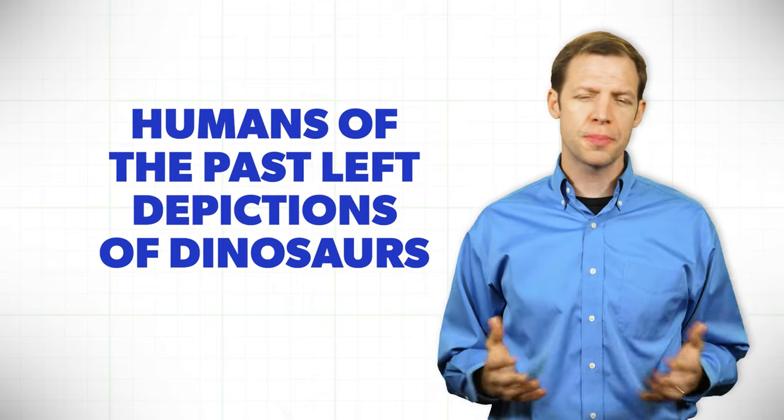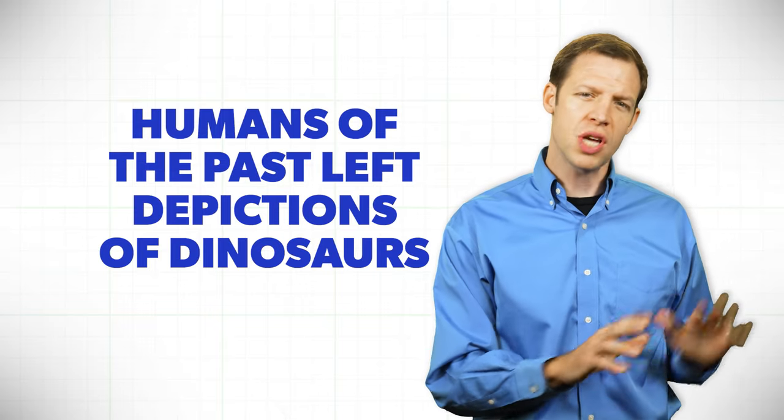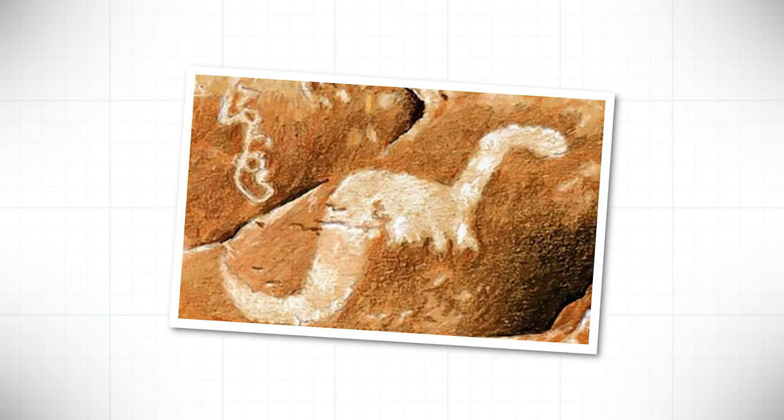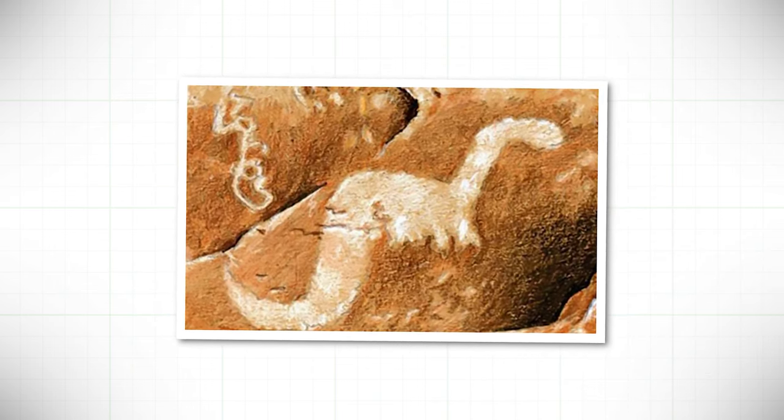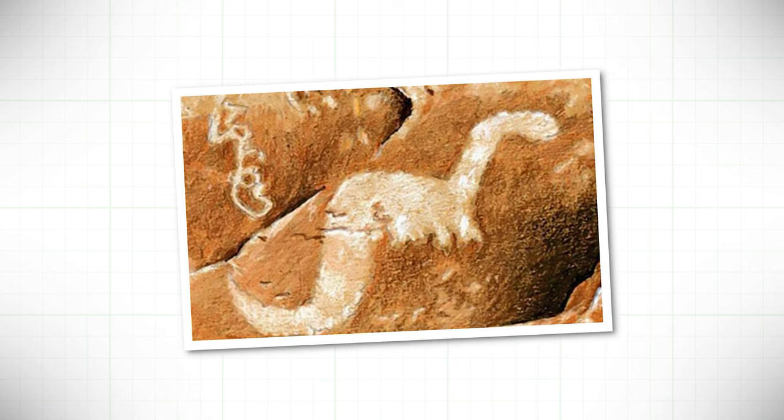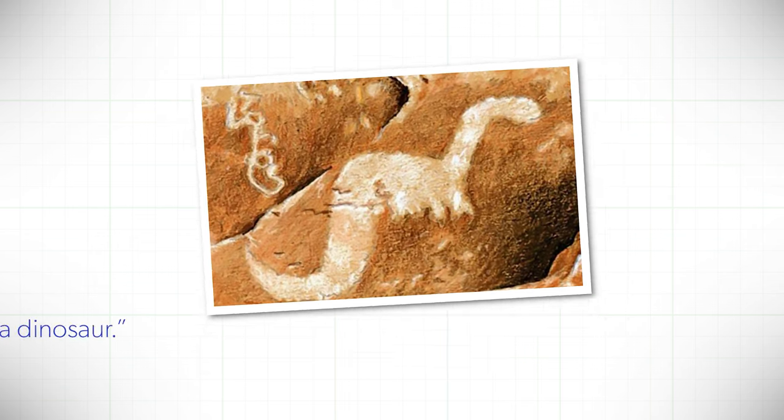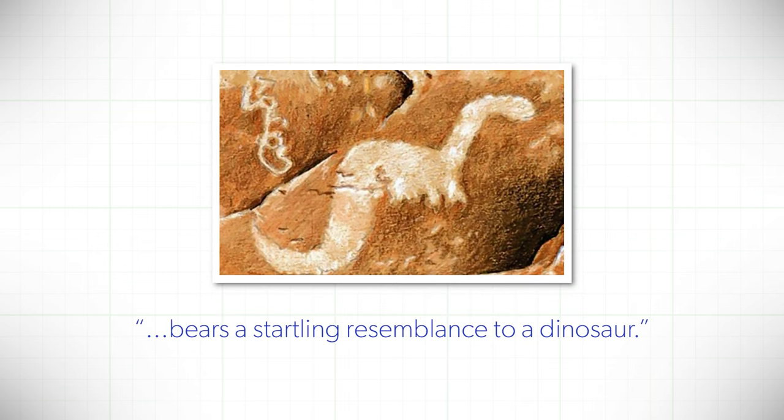First, there are numerous places in which humans of the past left depictions of dinosaurs. On the Kachina Natural Bridge in Blanding, Utah, there's a wall carving that the Anasazi Indians put there.